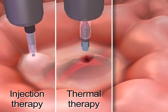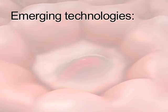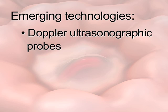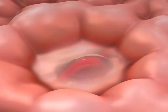All methods of endoscopic hemostasis have been shown to be effective, so it is recommended that endoscopists use the hemostasis technique that they are most comfortable performing and that is best fit to the appearance and location of the lesion. Emerging endoscopic technologies, such as Doppler ultrasonographic probes for guiding the application of hemostasis therapy and evaluating its success, as well as improved endoscopic suturing devices, may play important roles in future clinical management.